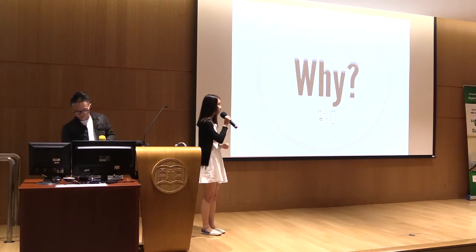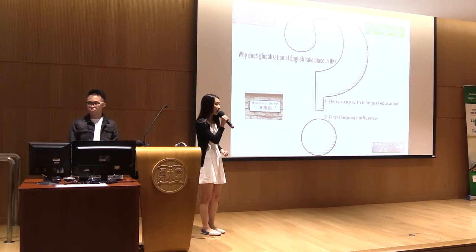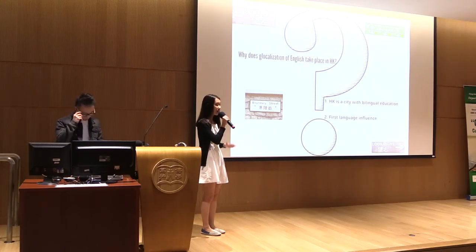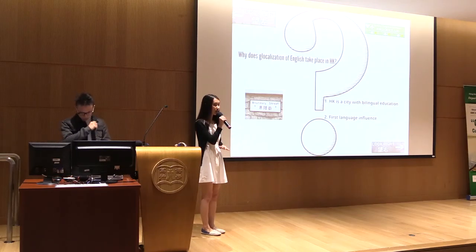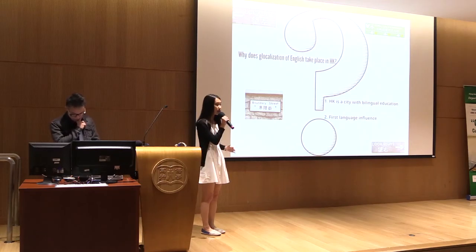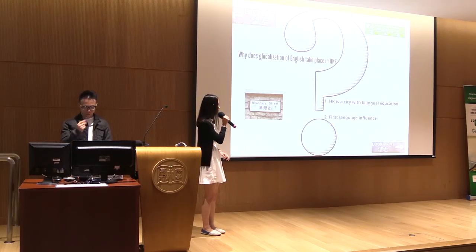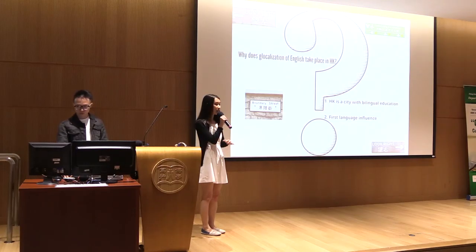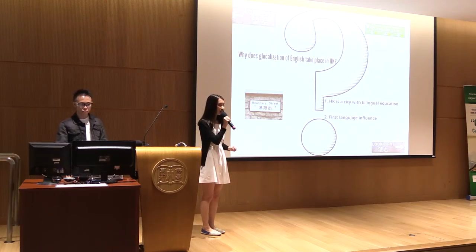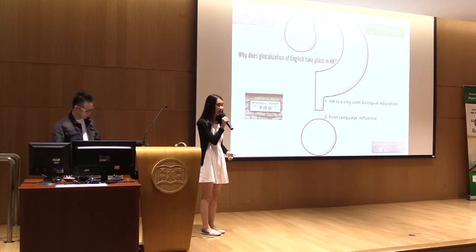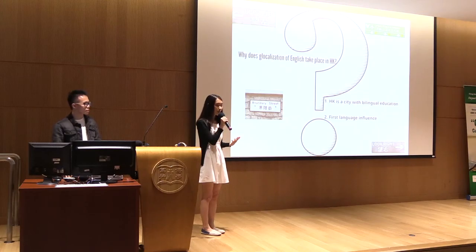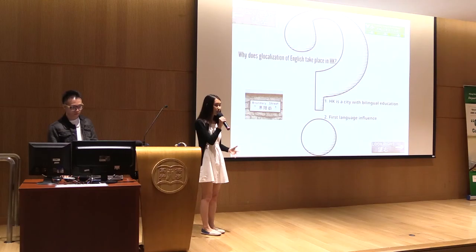There are two major reasons for the glocalization of English in Hong Kong. The first is that Hong Kong is a city with bilingual education — not many countries have bilingualism — providing a strong environment for glocalization to take place, resulting in language creativity, meaning how people mix Cantonese and English. The second contributing factor is first language influence: since Cantonese and English grammar are quite different, mixing both languages in usage can actually work better for communication.